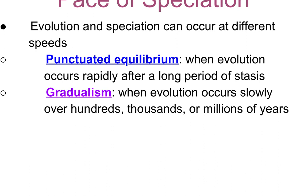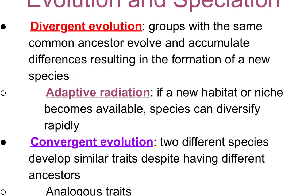Evolution and speciation can occur at different speeds. Punctuated equilibrium is when evolution occurs very rapidly after a long period of stasis, and gradualism is when evolution occurs very slowly over hundreds of thousands or millions of years. Divergent evolution is when groups from the same common ancestor evolve and accumulate differences, resulting in new species. Adaptive radiation is when a new habitat or niche becomes available and species diversify rapidly. Convergent evolution is when two different species develop similar traits despite having different ancestors — the analogous traits.